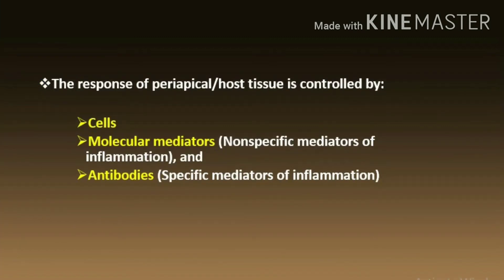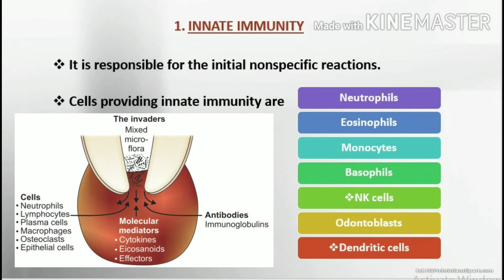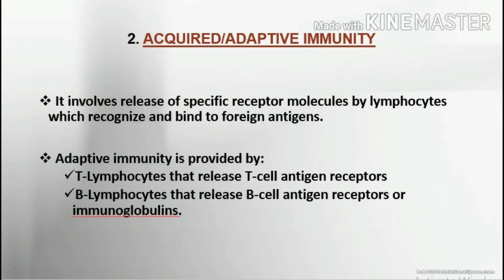In chronic lesions, the antigen-antibody complexes are confined within the lesion and do not enter the systemic circulation. The response of periapical host tissue is controlled by cells, molecular mediators, nonspecific mediators of inflammation, and antibodies as specific mediators of inflammation. Immunity is of two types: innate immunity, responsible for initial nonspecific reactions; and acquired or adaptive immunity, which involves release of specific receptor molecules by lymphocytes that recognize and bind to foreign antigens, provided by T lymphocytes releasing T cell antigen receptors or immunoglobulins.